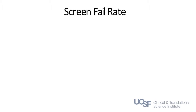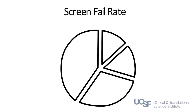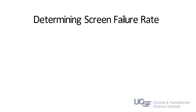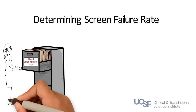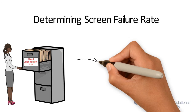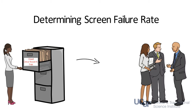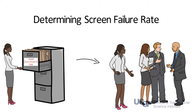Understanding your study's anticipated screen fail rate can help you figure out how many people will have to be screened to get enough eligible participants. If you've identified similar prior study campaigns, look back at the screening data and try to understand how many people were spoken with over the phone, how many were screened in person, and how many charts were reviewed.